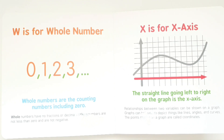X is for x-axis. The straight line going left to right on the graph is the x-axis. Relationships between two variables can be shown on a graph. Graphs can help to depict things like lines, angles, and curves. The points plotted on the graph are called coordinates.